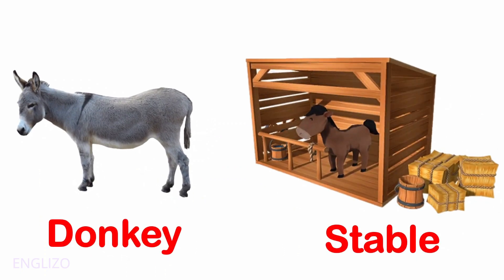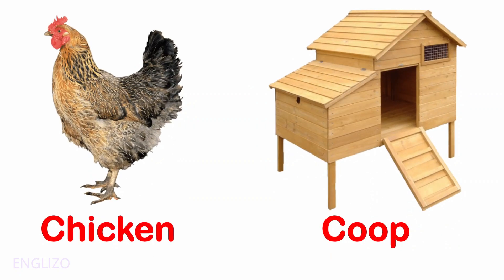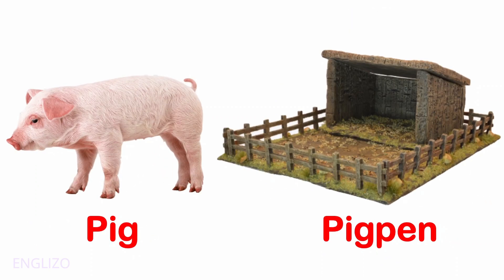A donkey lives in a stable. A chicken lives in a coop. A pig lives in a pig pen.